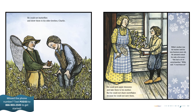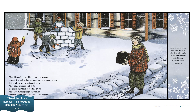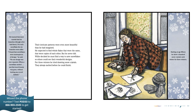Willie's mother was his teacher until he was 14 years old. He attended school for only a few years. When his mother gave him an old microscope, he used it to look at flowers, raindrops, and blades of grass. Best of all, he used it to look at snow. While other children built forts and pelted snowballs at roosting crows, Willie was catching single snowflakes. Day after stormy day, he studied the icy crystals. From his boyhood on, he studied all forms of moisture. He kept a record of the weather and did many experiments with raindrops. Their intricate patterns were even more beautiful than he had imagined. He expected to find whole flakes that were the same, that were copies of each other. But he never did.